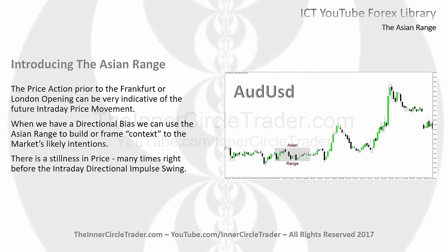The price action prior to the Frankfurt open or London opening can be very indicative of future intraday price movement. When we have a directional bias, you can use the Asian range to build or frame a context or storyline to the market's likely intentions. There is a stillness in price many times right before the intraday directional impulse price swing. Looking at this Aussie dollar chart, you can see the little shaded area delineated with the gray box — I've labeled it the Asian range.